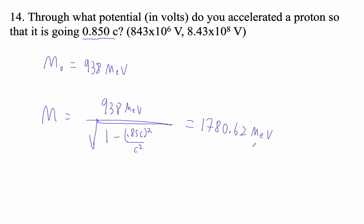So its kinetic energy is simply going to be the dilated mass minus the rest mass. And since we're in electron volts already, we don't need to worry about the c squared.